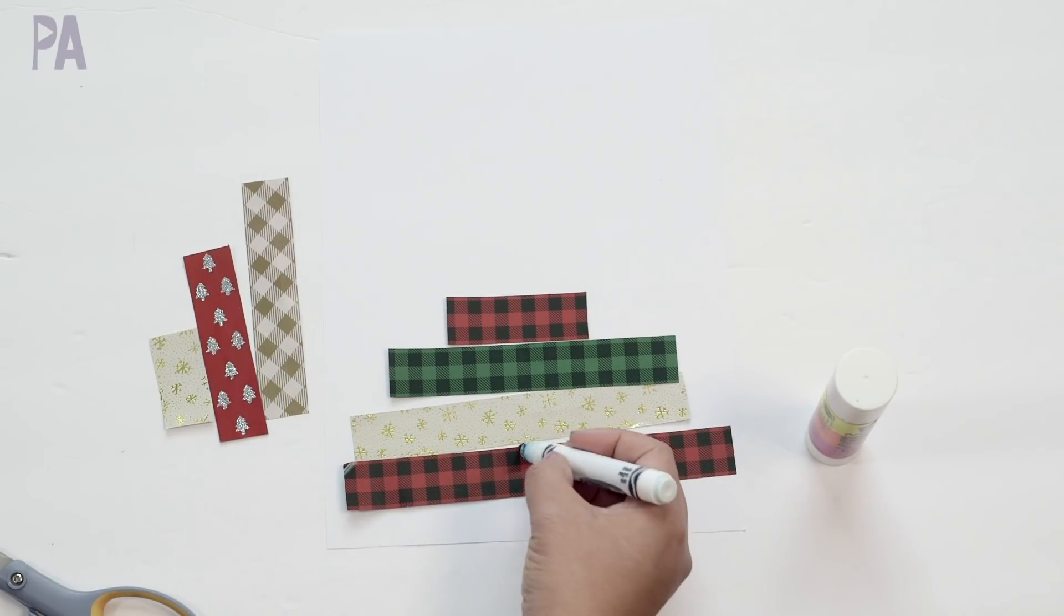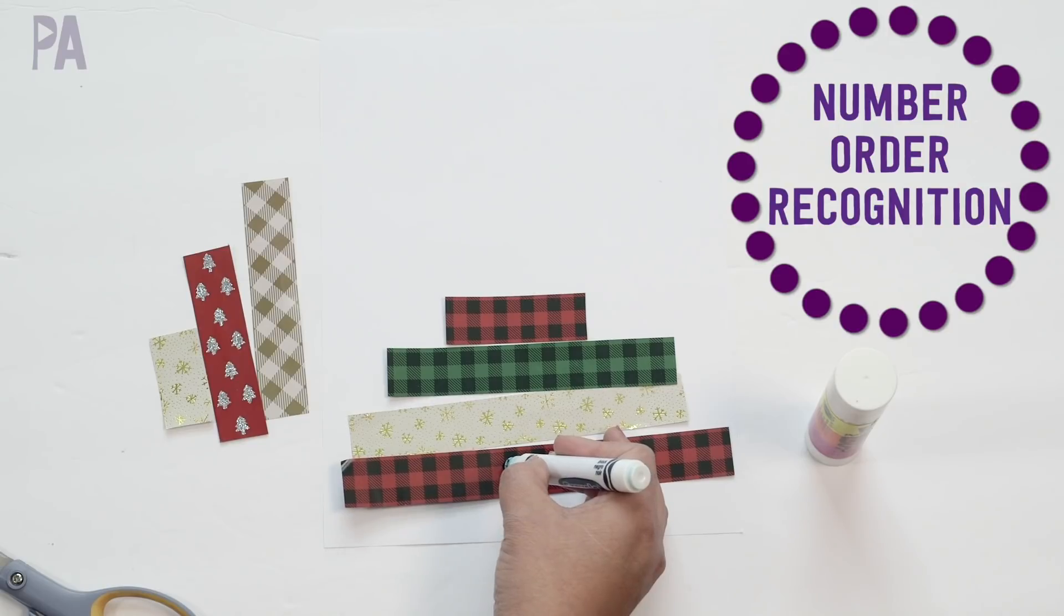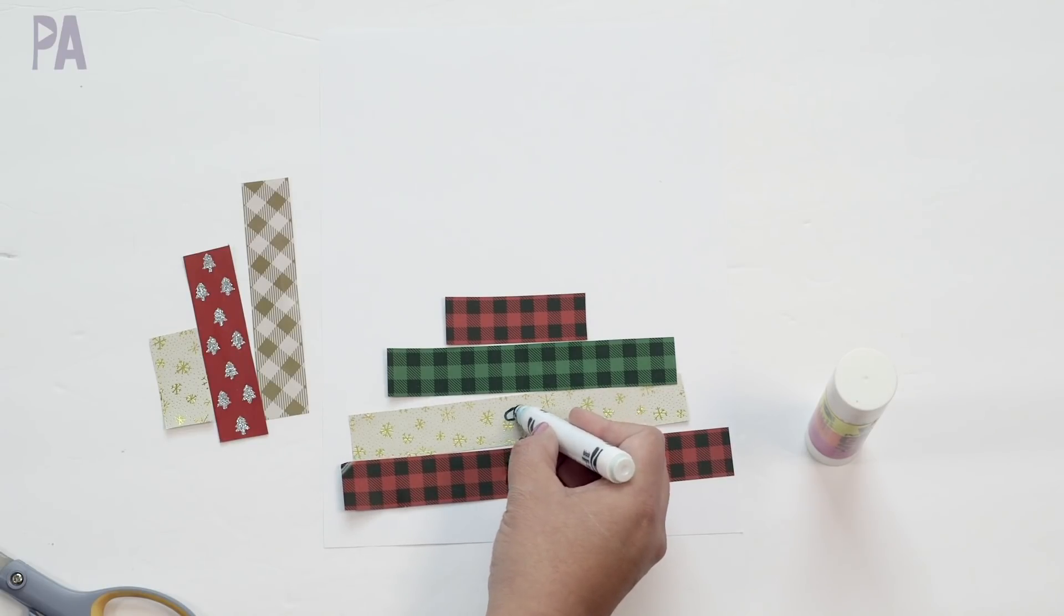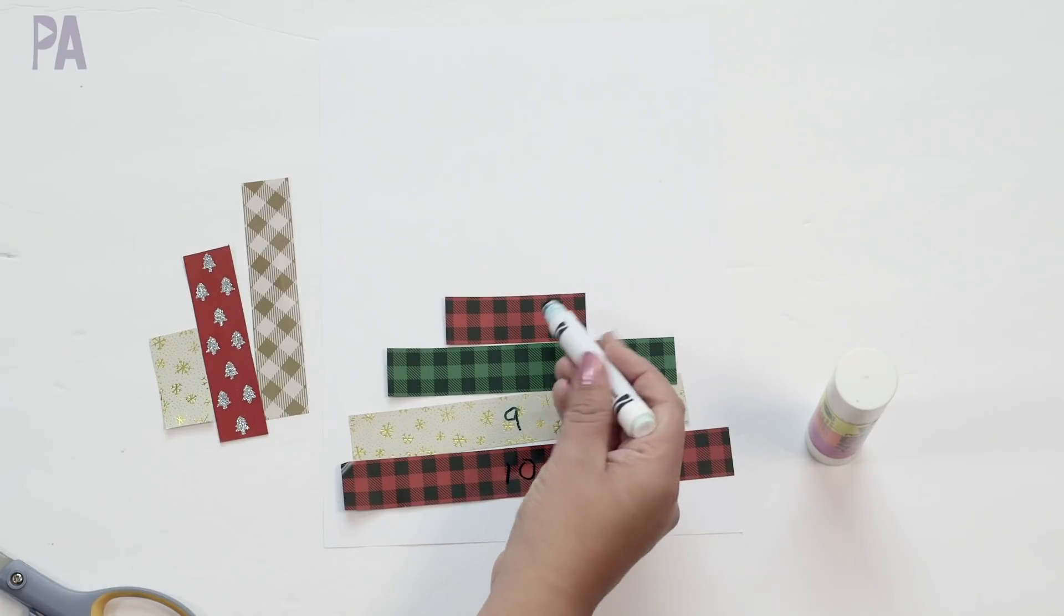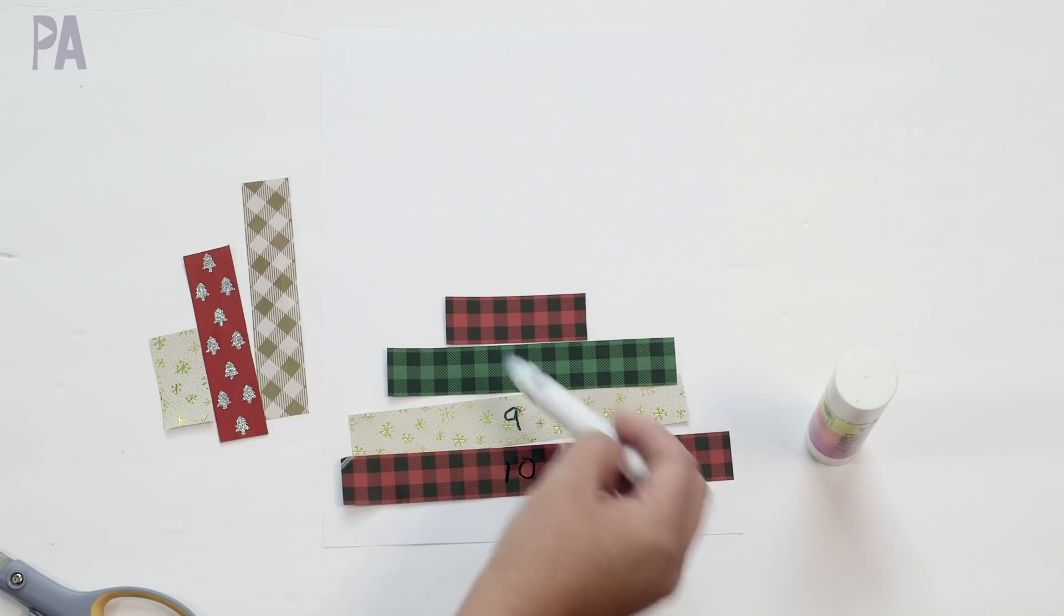For a child that's learning numbers, you can also label these pieces of paper so they put them in sequential order. So I would call the bigger one 10. Of course, it's hard to see here. 9 and I think that's next 8. And so instead of just putting them visually in order, they're going to be putting them in numerical order.